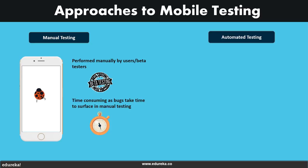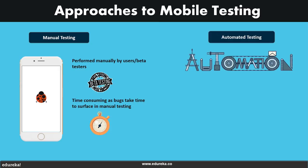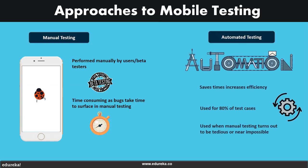Therefore, as a rule of thumb, 20% of application testing should be performed manually through the help of alpha and beta releases, while the rest should be automated. Now automated testing is the second approach to mobile application testing, and in this process an array of test cases are set up which would generally cover 80% of the testing process.